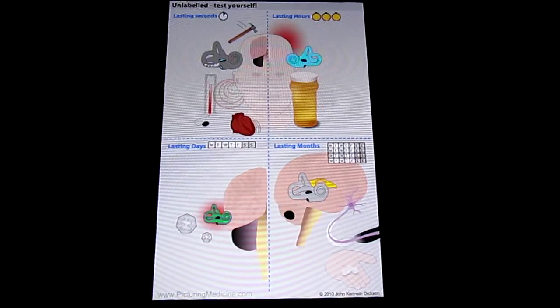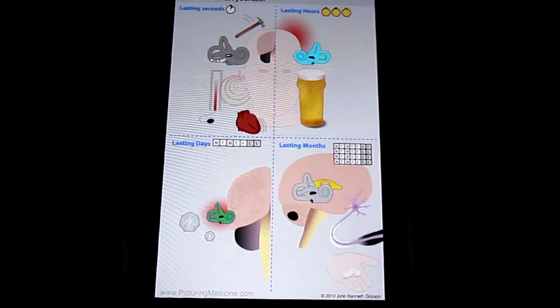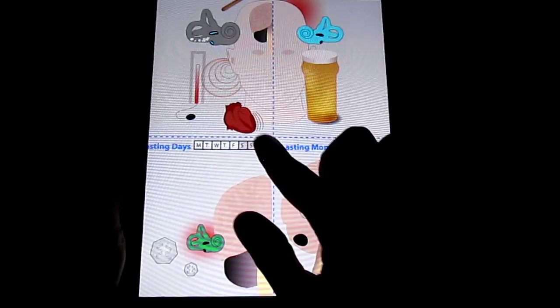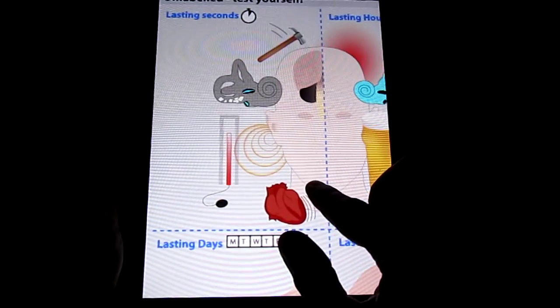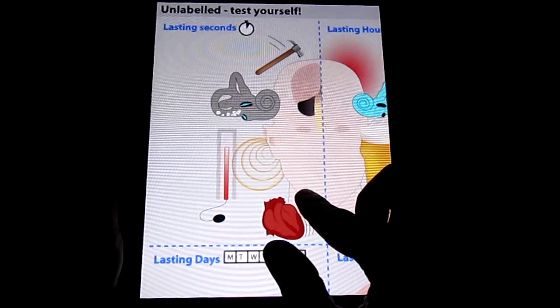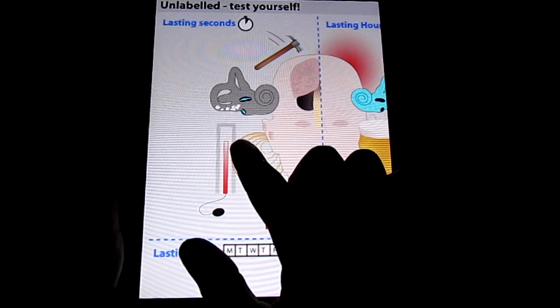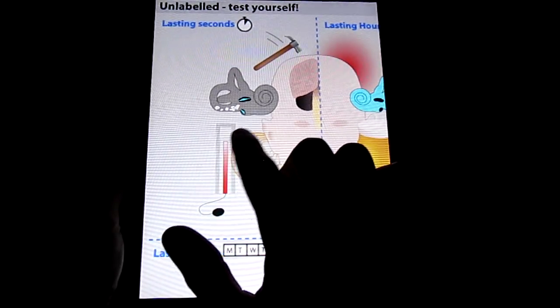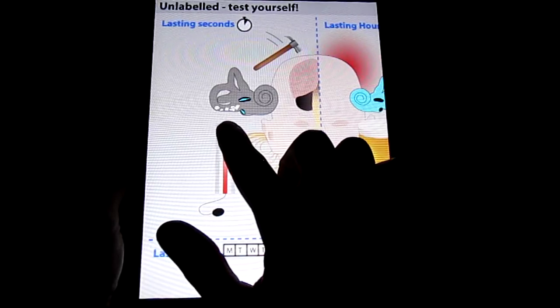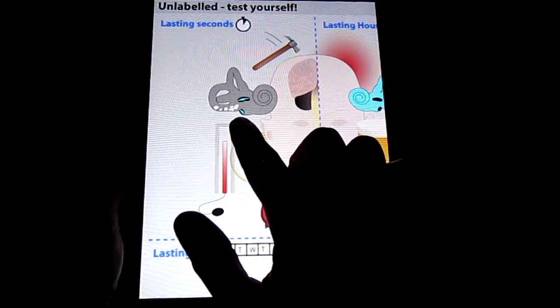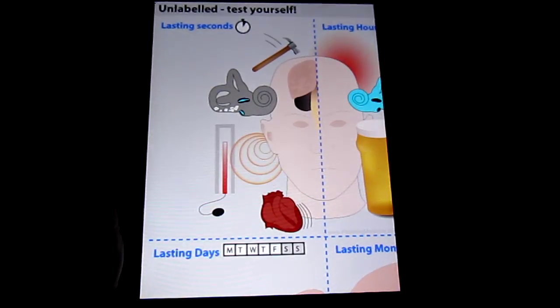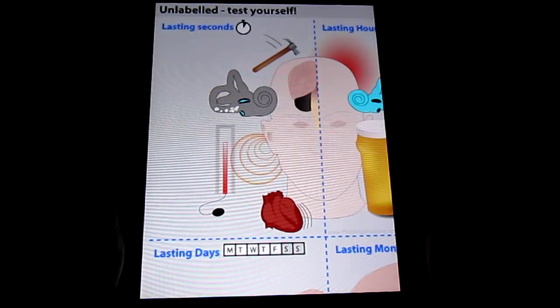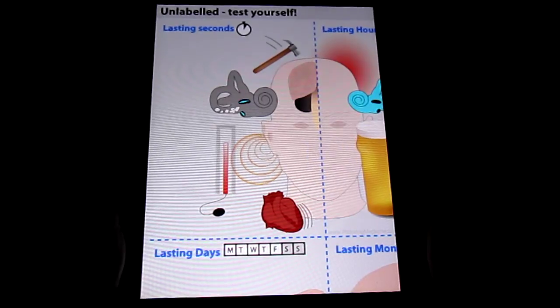One of the more common causes is benign paroxysmal positional vertigo, which relates to small bony fragments within the semicircular canals called otoliths. They can cause vertigo, and this condition can be treated by means of Epley's maneuver to try to reposition those bony fragments.